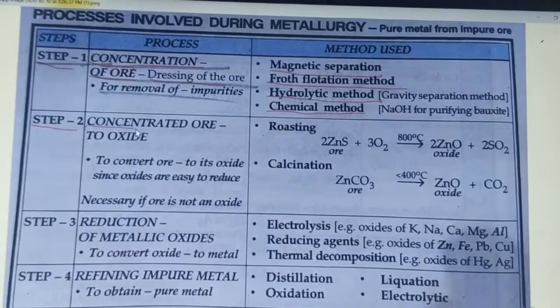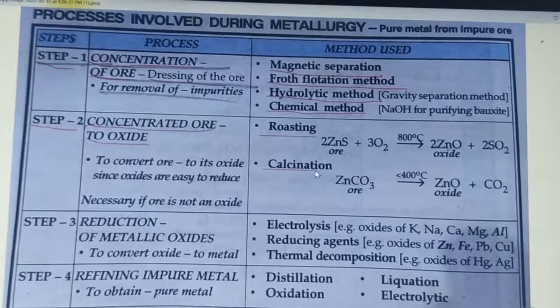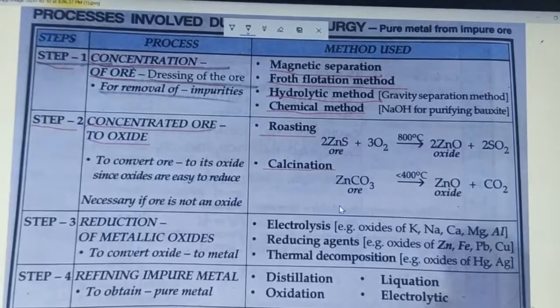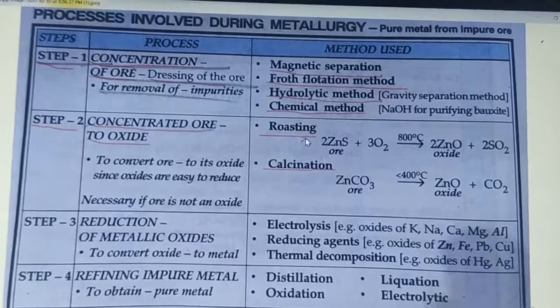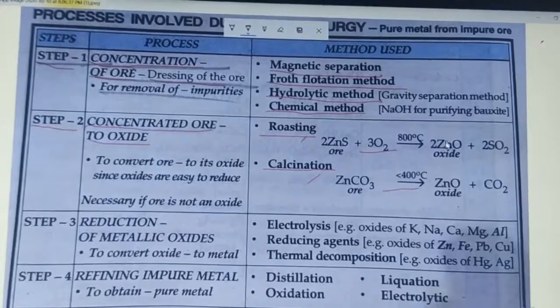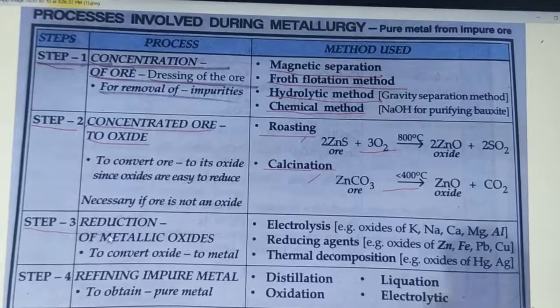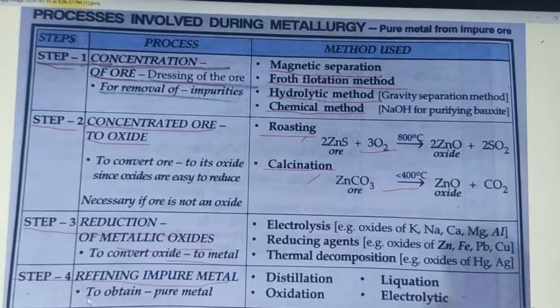In this step, first we will convert concentrated ore to oxide. It is done by two methods: roasting and calcination. Roasting is basically done for sulphide ores. Calcination is done for carbonate ores. In roasting, you take excess air and in calcination, the absence of air. After converting concentrated ore to oxide, we will do reduction reaction in step 3 to change metal oxide to metal. Then step 4, we will refine impure metal to obtain pure metal.